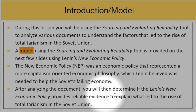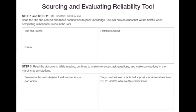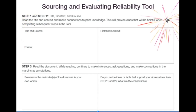After analyzing the document, we'll determine if Lenin's NEP provides reliable evidence to explain what led to the rise of totalitarianism, which came really after Lenin in the Soviet Union. Remember, this is the beginning — Step 1 is source title, context, and source. We have to read the title and context and make connections to prior knowledge. This will provide clues that will be helpful when completing subsequent steps in the tool.